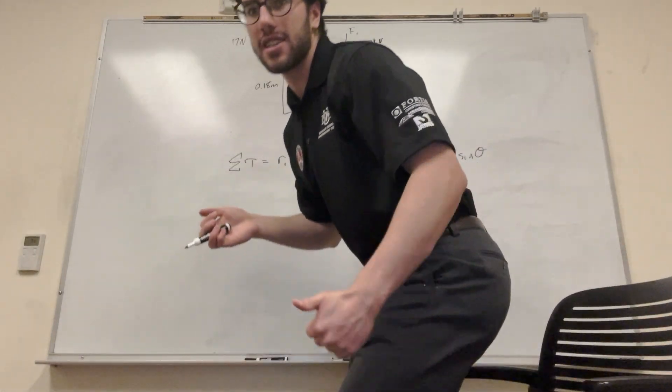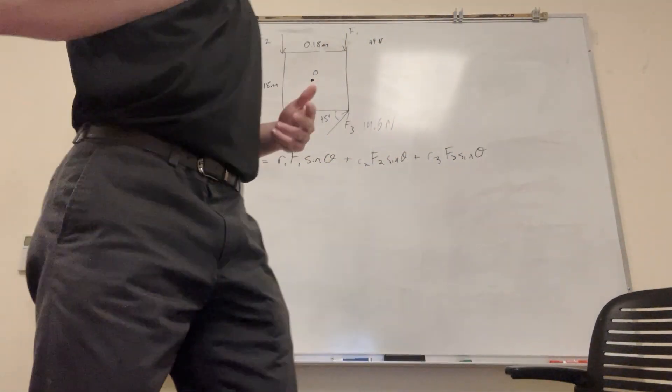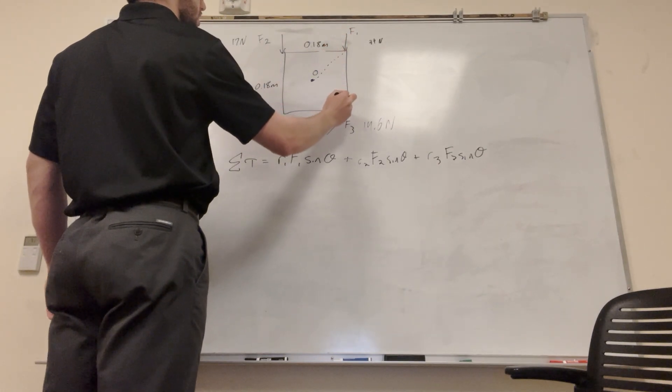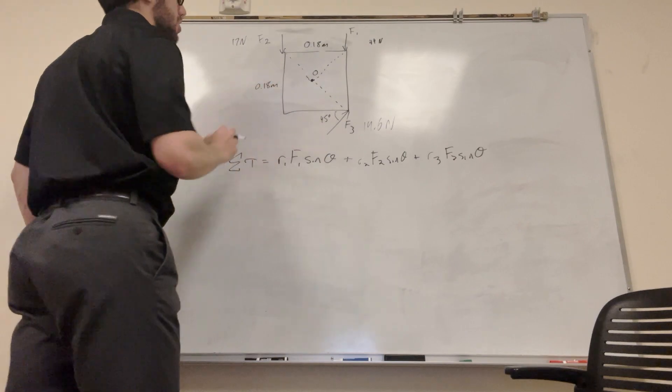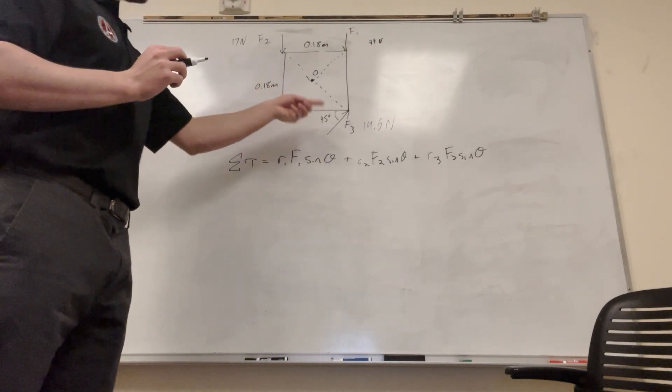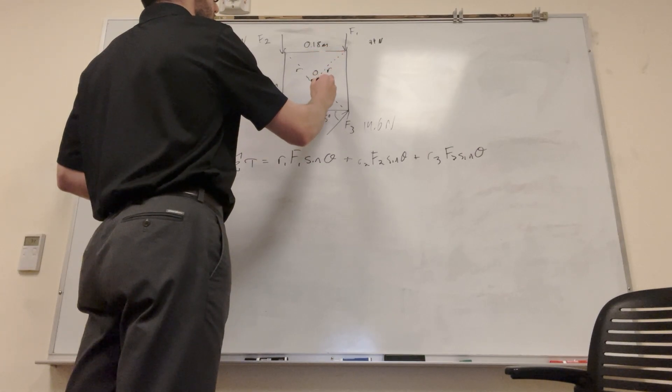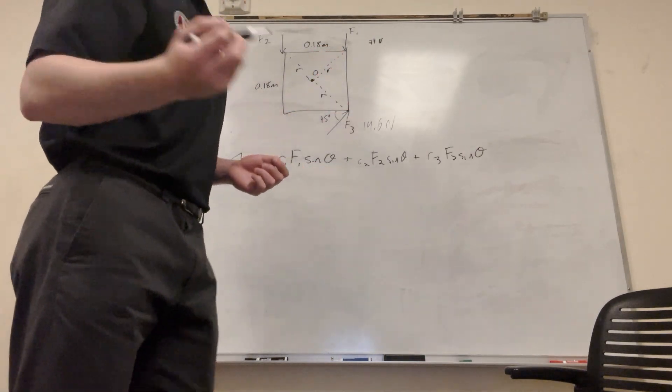So let's look at this. We need the radius, we have the forces and we need the thetas. So let's connect a line to each one of these. So we know that this is a square and this is at the center. They're each acting on a corner. So that means that this radius is equal to this radius is equal to this radius.